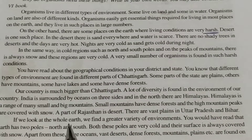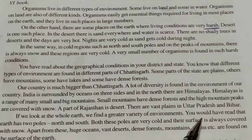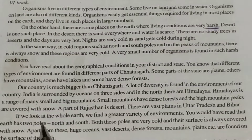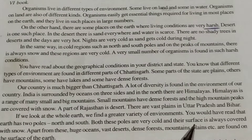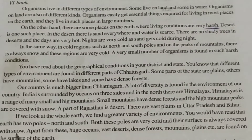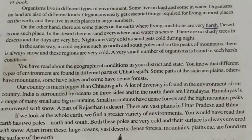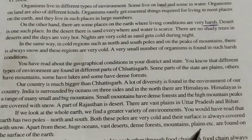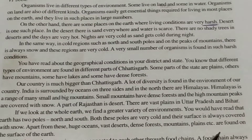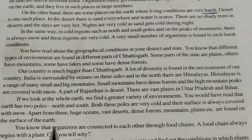If we look at the whole earth, we find a greater variety of environments. You would have read that the earth has two poles — north and south. Both these poles are very cold and their surface is always covered with snow. Apart from these, huge oceans, vast deserts, dense forests, mountains, plains etc. are found on the surface of the earth.